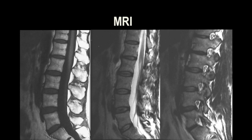Moving on to MRI, I don't want to bog you down with too much physics or the details. The basics would be to understand we have different sequences — mainly T1 weighted sequences and T2 weighted sequences. Those are the bread and butter. The T1 is more anatomic, more closely related to CT, and the T2 or fluid sensitive images will show you edema and, as the name implies, fluid.